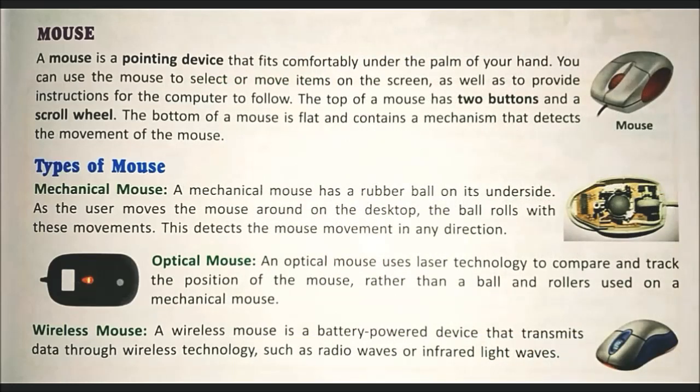Next input device is mouse. A mouse is a pointing device that fits comfortably under the palm of your hand. You can use the mouse to select or move items on the screen, as well as to provide instructions for the computer to follow. The top of a mouse has two buttons and a scroll wheel. The bottom of a mouse is flat and contains a mechanism that detects the movement of the mouse.